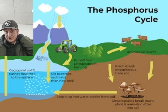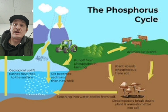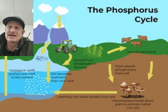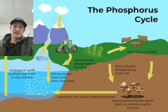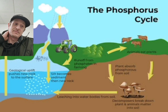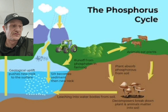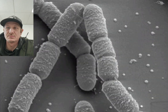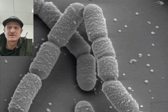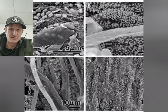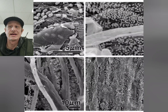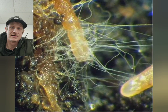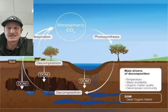Phosphorus cycling happens in three main ways. First, we have mineralization of organic phosphorus — organic phosphorus from dead plants and animals is broken down into inorganic, plant-available forms, which is phosphate, by different bacteria like Bacillus and Pseudomonas. Second, we have solubilization, where insoluble phosphorus bound in rock and clay is converted into plant-available forms by bacteria using organic acids and enzymes.